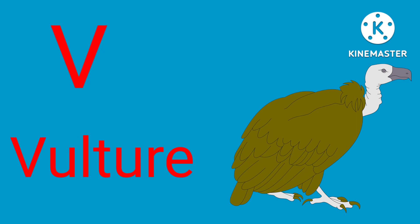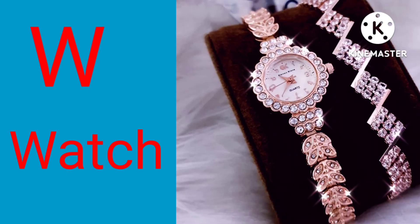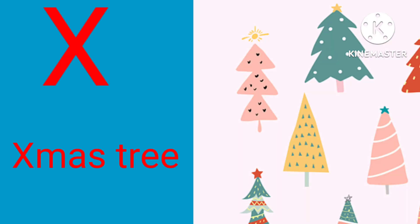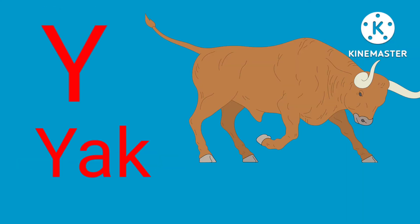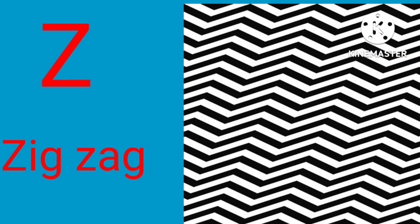V for vulture, W for watch, X for X-mas tree, Y for yak, Z for zigzag.